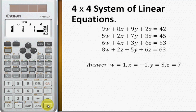After you key in all of this, you press equals and the calculator will return W equal to 1, X negative 1, Y 3, Z 7.